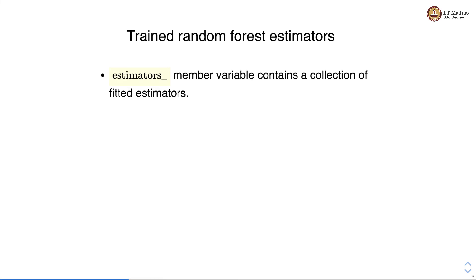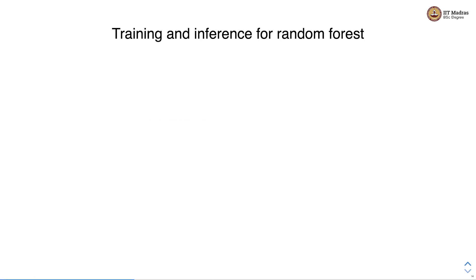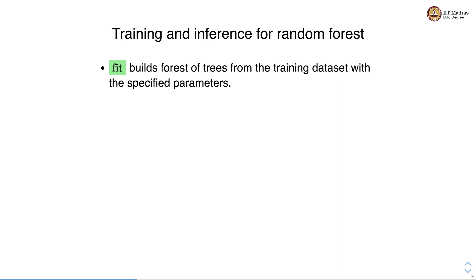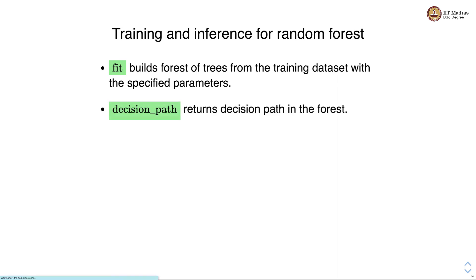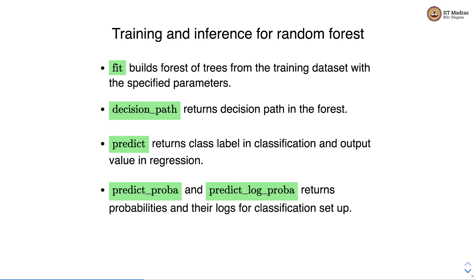The estimators_ member variable contains a collection of fitted estimators, and feature_importances_ contains a list of important features. The fit method builds a forest of trees from the training data with specified parameters. decision_path returns the decision path in the forest. predict returns the class label in classification and a numeric value in regression. predict_proba and predict_log_proba are available in classification and return probabilities and log probabilities respectively. In this video we studied sklearn functionality for voting, bagging, and random forest, looking at how to set up classification and regression with each.